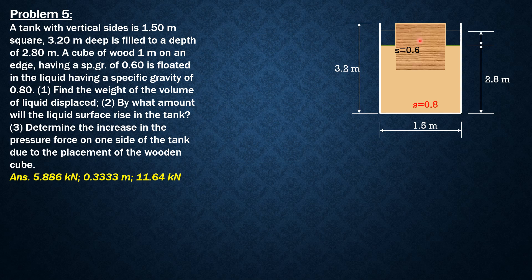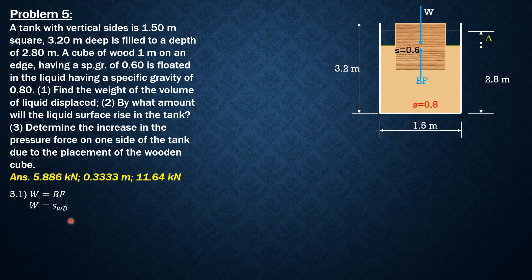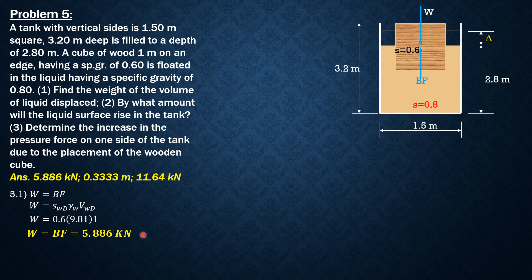For question 1, the weight of the volume of liquid displaced is simply the weight of the cube. The weight of the cube equals the specific gravity of the wood times the specific weight of water times the volume of the wood. Substituting: 0.6 × 9.81 kN/m³ × 1 m³ = 5.886 kilonewtons. That's the answer for the first question.